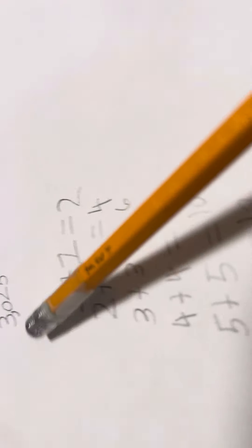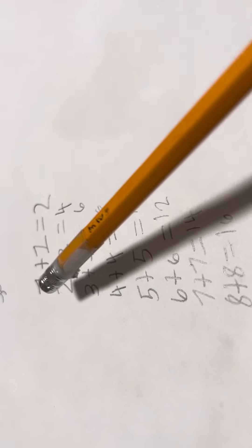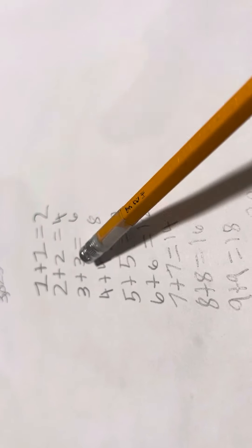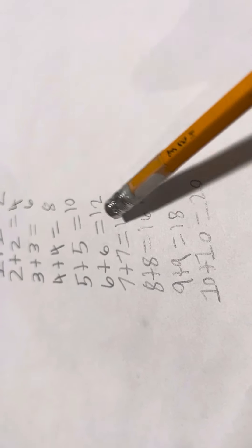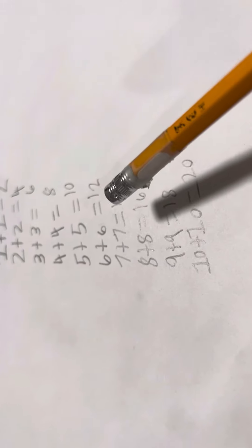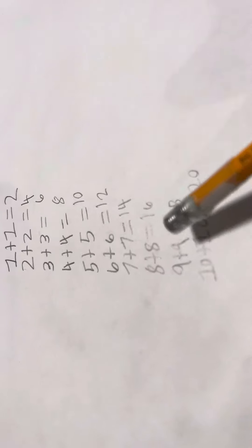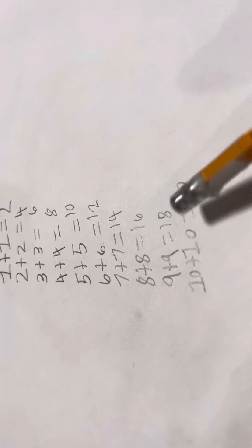And it's correct because 1 plus 1 is 2, 2 plus 2 is 4, 3 plus 3 is 6, 4 plus 4 is 8, 5 plus 5 is 10, 6 plus 6 is 12, 7 plus 7 equals 14, 8 plus 8 equals 16, 9 plus 9 equals 18, 10 plus 10 equals 20.